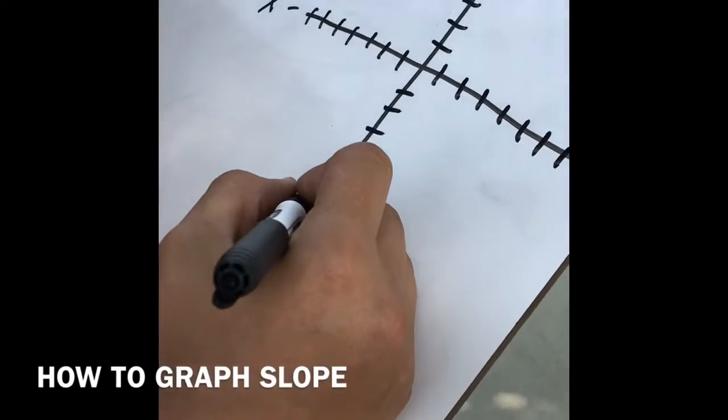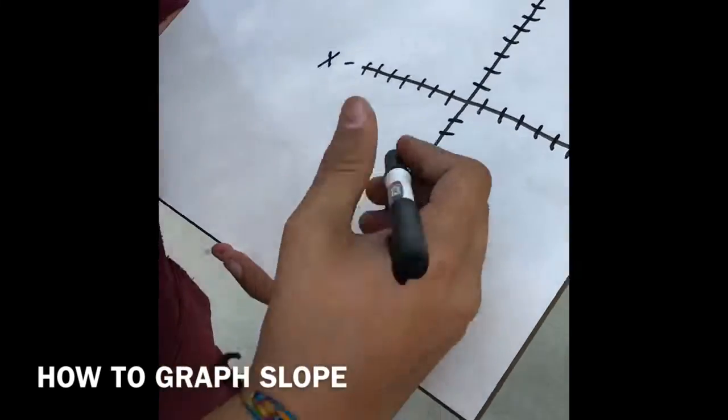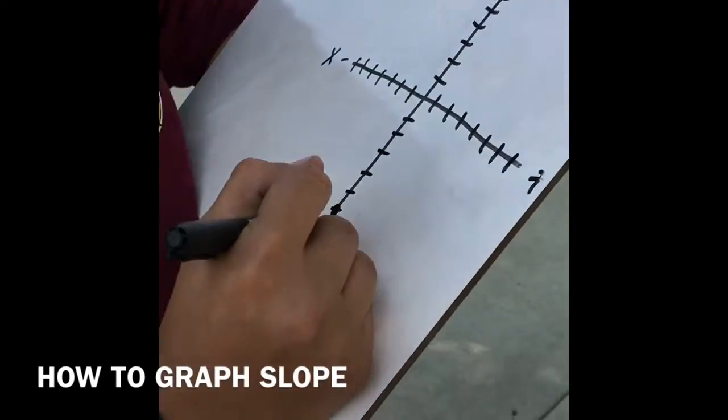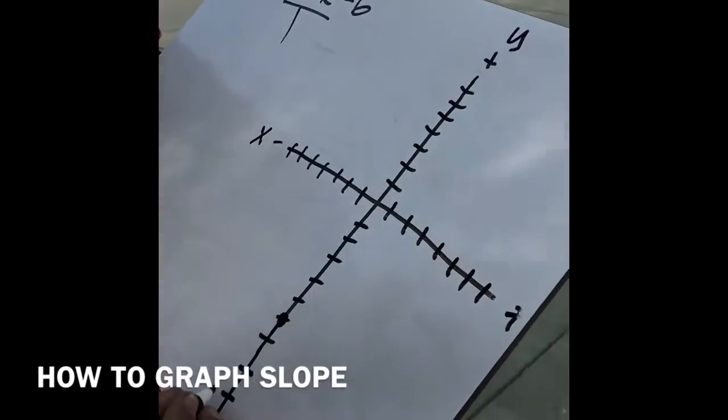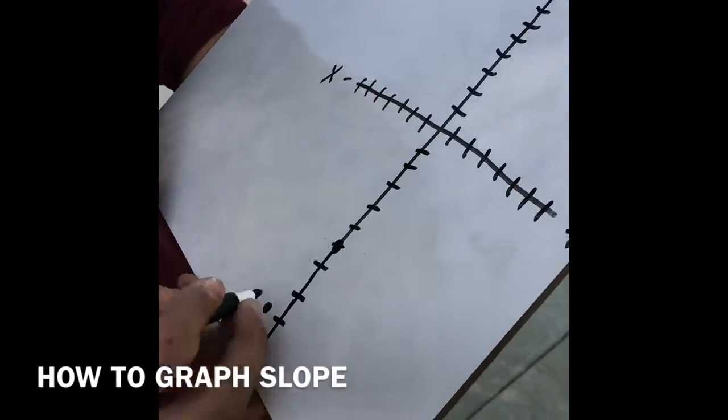So we're going to go. Okay. So we are going to go down 1, 2, 3, because it's negative. So we're going down. And then we're going to go over to negative 1. So right there. So now I have another point.